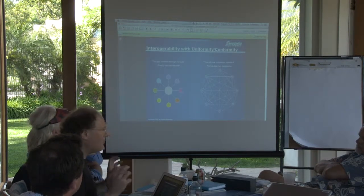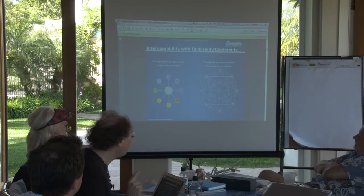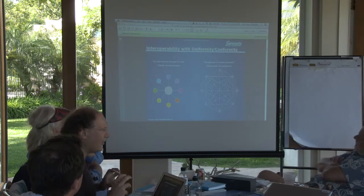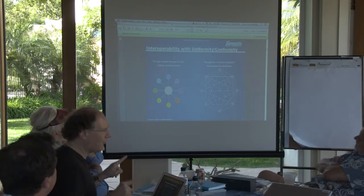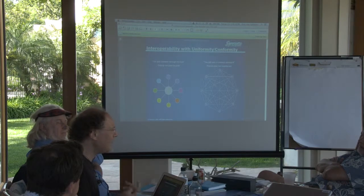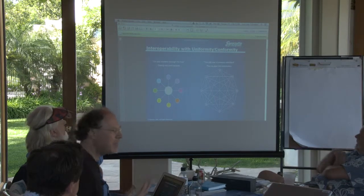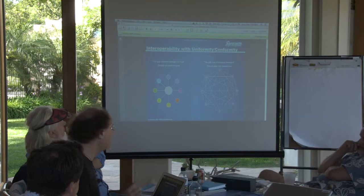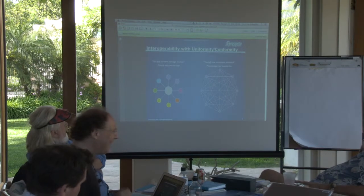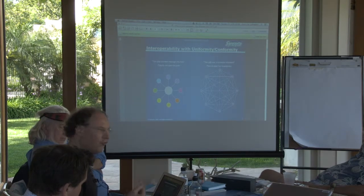What do I mean by interoperability with uniformity and conformity? On the left of this picture — slide nine — there's the totalitarian centralized model: you will connect through the hub, and even if you use a different formalism, that's okay as long as you convert it to ours in a least common denominator approach. On the right of slide nine is more of a peer-to-peer, but no less totalitarian approach, where you push decisions off to the network but everyone has to use the same formalism.